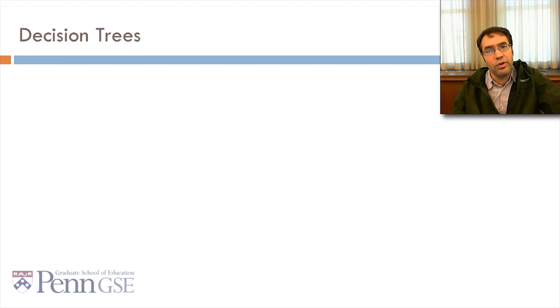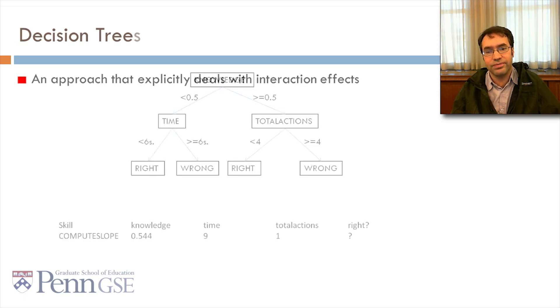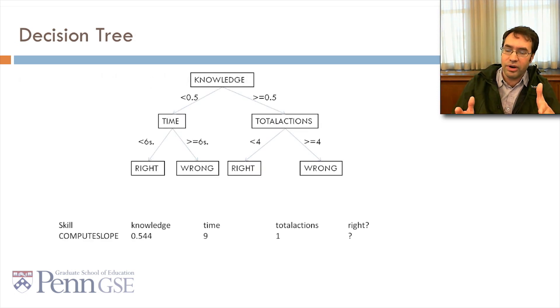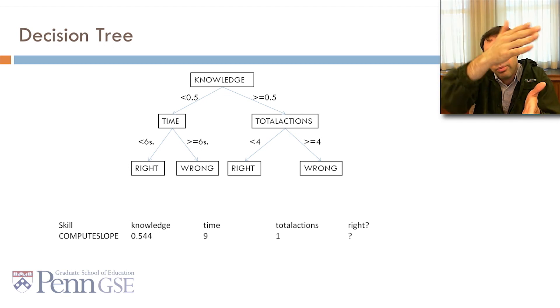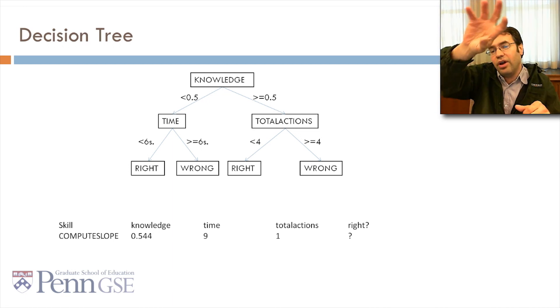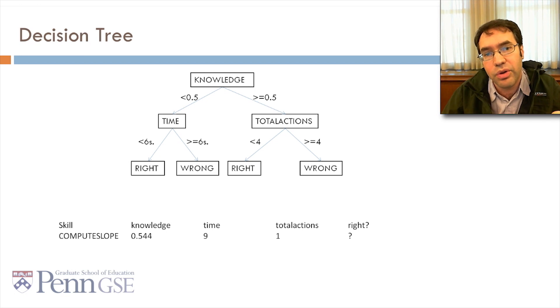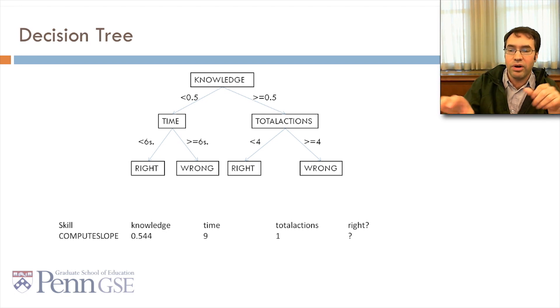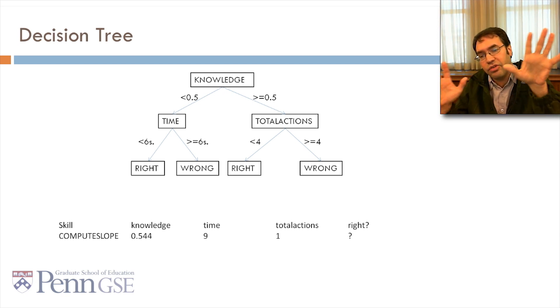Instead, you may want to use algorithms like decision trees, which are more explicitly dealing with interaction effects. Here's an example of a decision tree. If knowledge is less than 0.5 and time is less than 6 seconds, then the student's right. But, if knowledge is less than 0.5 and time is greater than or equal to 6 seconds, then the student's wrong. The other branch is that if knowledge is greater than or equal to 0.5, and total actions is less than 4, then the student's right. But, if it's greater than or equal to 4, then the student is wrong.